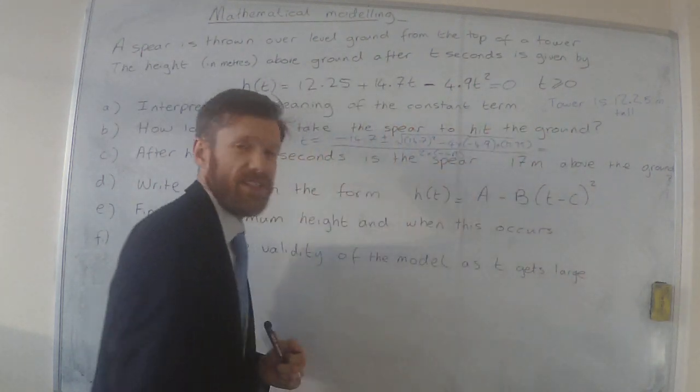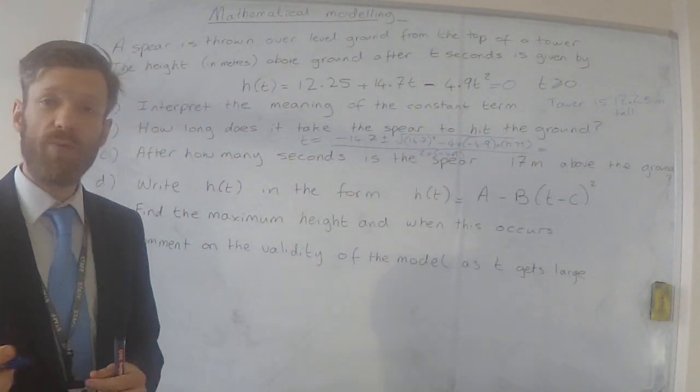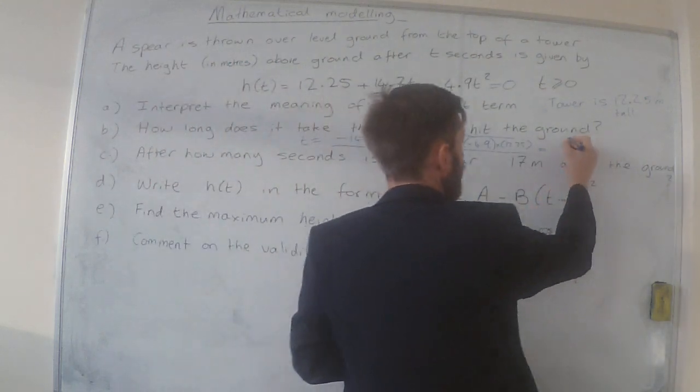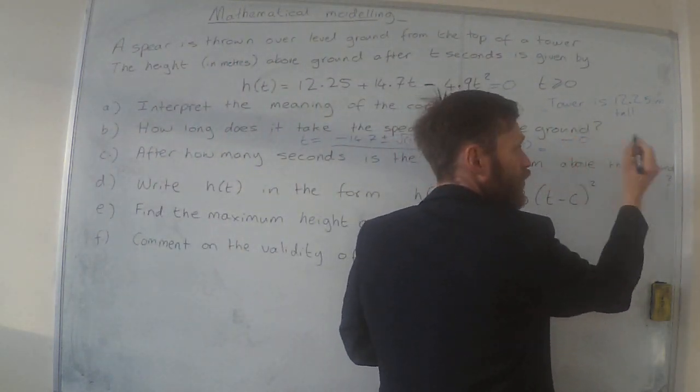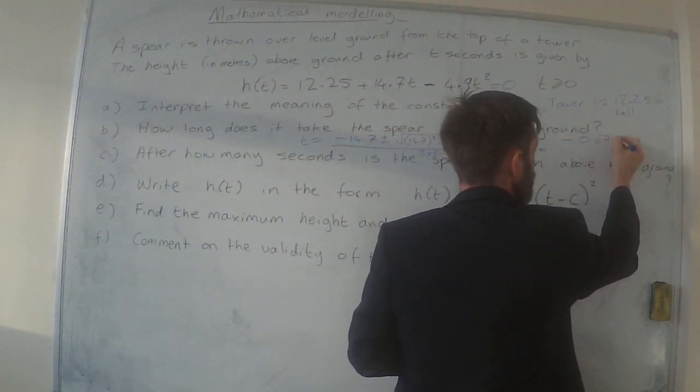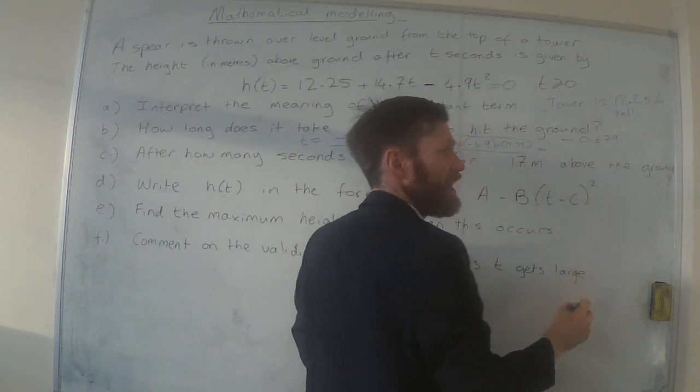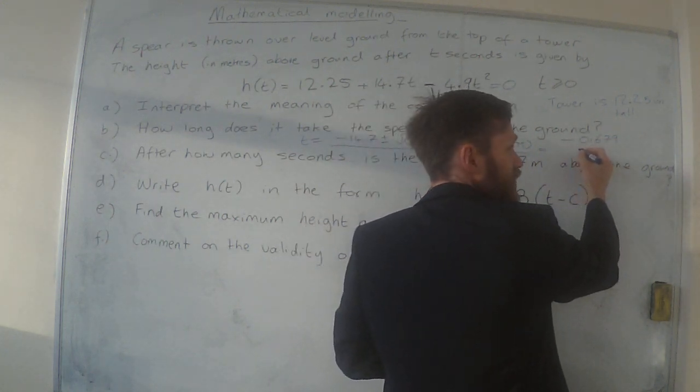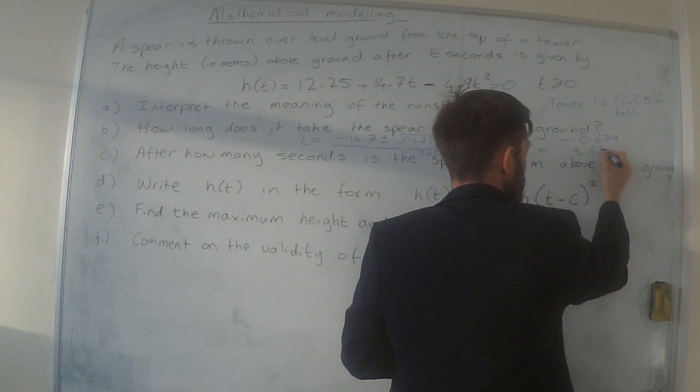If you put that into your calculator, you'll obviously get two answers. One of them is -0.679 to three significant figures, and the other one is 3.68 seconds.